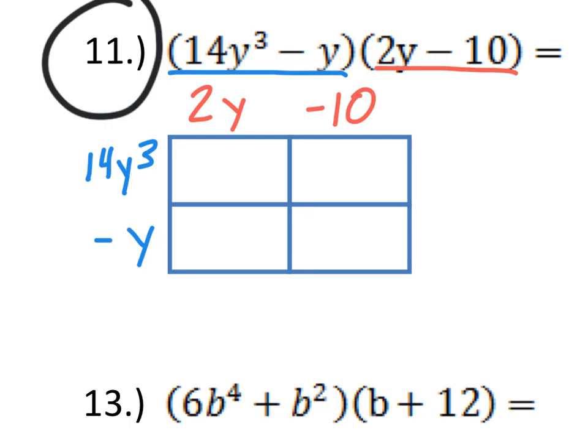To get this box filled in right here, we need to multiply the two terms that are on its border, which would be 14y cubed and 2y. So, let's do that. 14 times 2 is 28, and y to the 3rd times y is y to the 4th. Now, to get this box filled in, we multiply the two numbers that are on its border. That is negative y and 2y. So, negative 1 times 2 is negative 2, and y times y is y squared.